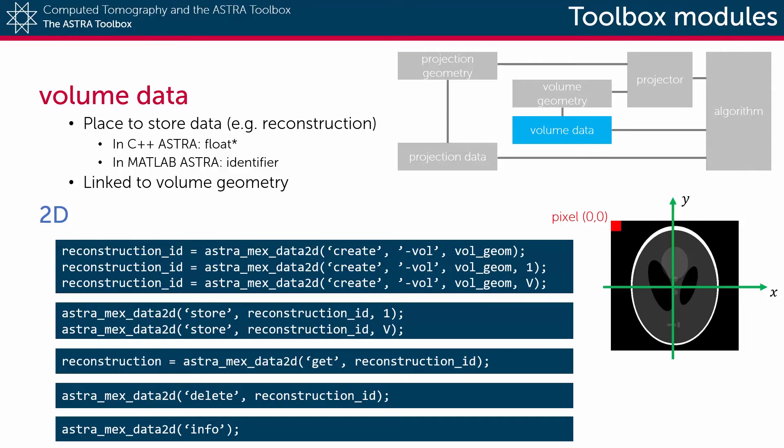To transfer the data from the Astra memory back into the MATLAB environment, for example after a reconstruction algorithm has finished, you use get and the data identifier.